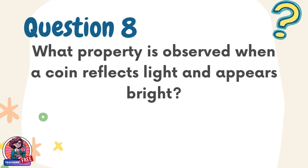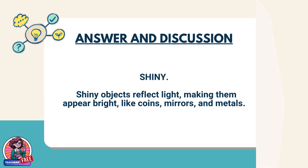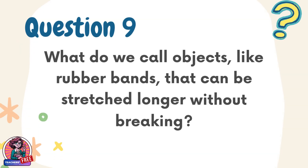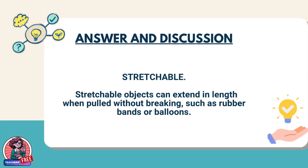Question 8. What property is observed when a coin reflects light and appears bright? Answer: Shiny. Shiny objects reflect light, making them appear bright, like coins, mirrors, and metals. Question 9. What do we call objects, like rubber bands, that can be stretched longer without breaking? Answer: Stretchable. Stretchable objects can extend in length when pulled without breaking, such as rubber bands or balloons.